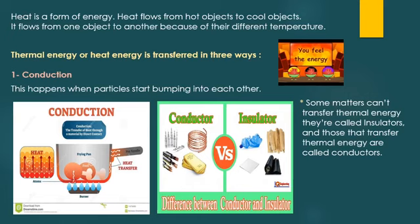Heat is a form of energy. Heat flows from hot objects to cool objects — it flows from one object to another because of their different temperatures. So now we know that if two materials have two different temperatures, heat can be transferred from one object to another. Thermal energy can be transferred in three ways: the first one is conduction, the second one is convection, and the third one is radiation.